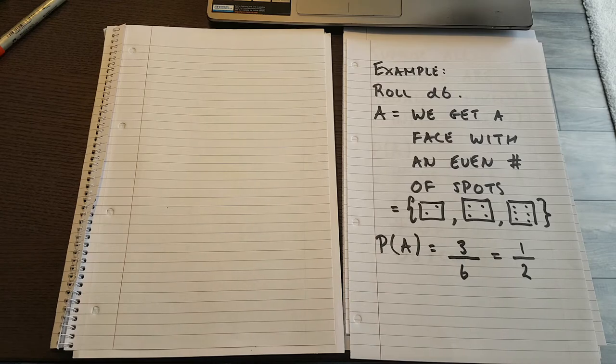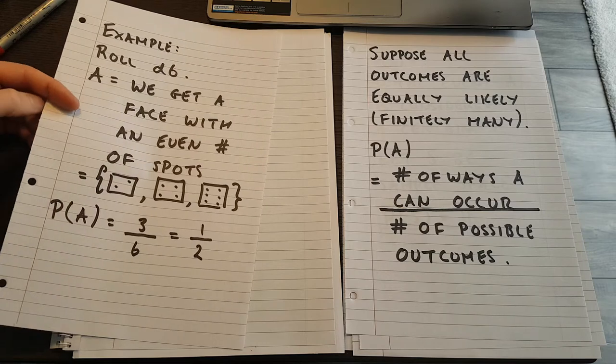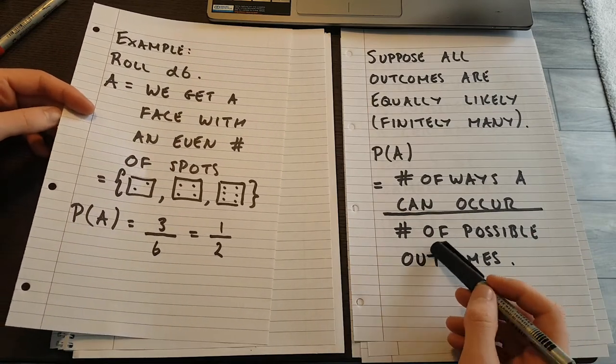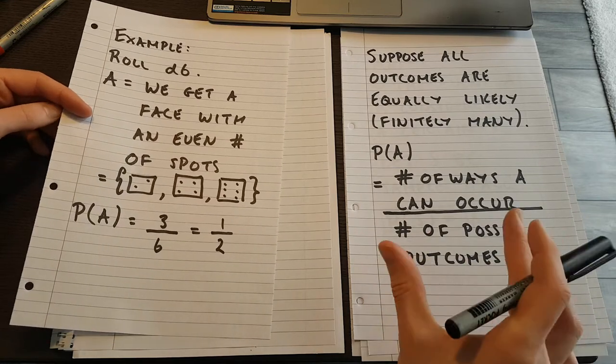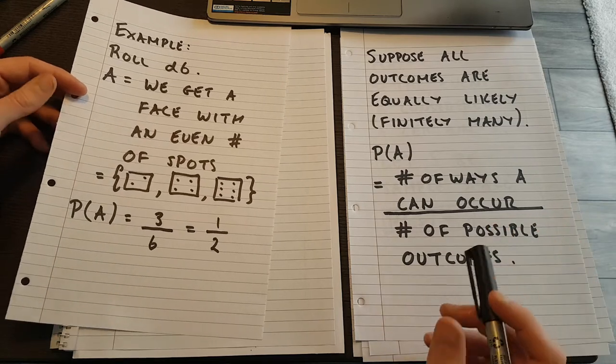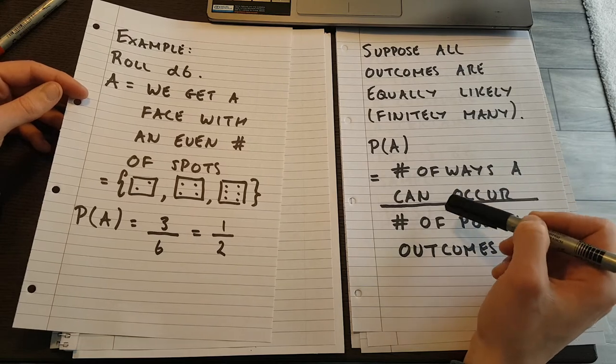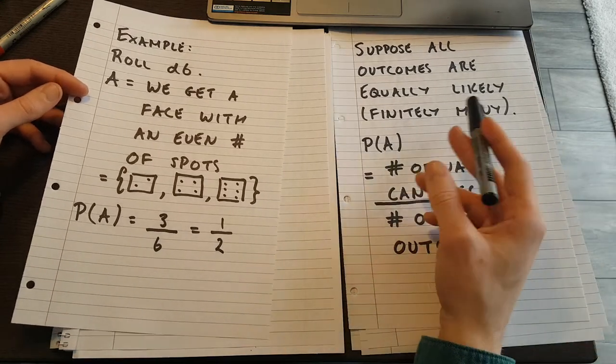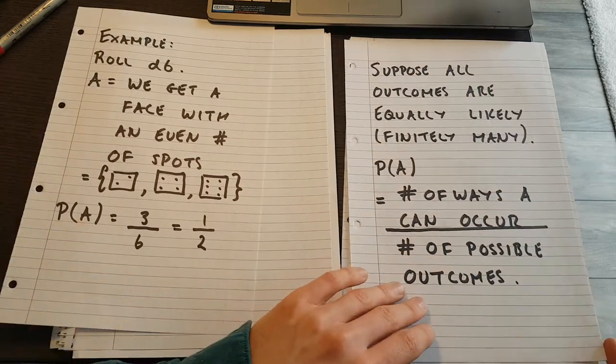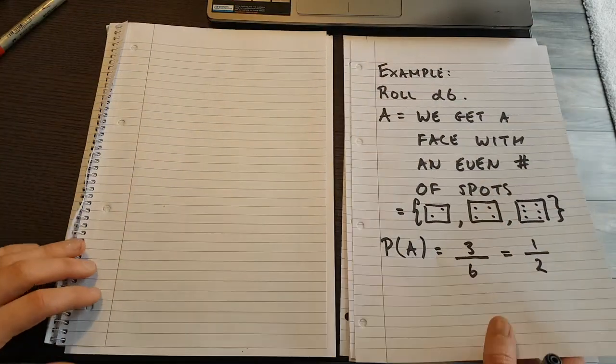Now, this is not really a great definition most of the time. Why is this not a great definition? The reason that this isn't a great definition is, first of all, there might be infinitely many possible outcomes. And I can't divide by an infinite number. The other problem is that sometimes outcomes themselves are not equally likely. There are many events where certain outcomes are favored and other outcomes are less likely.